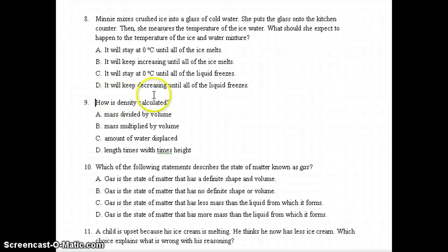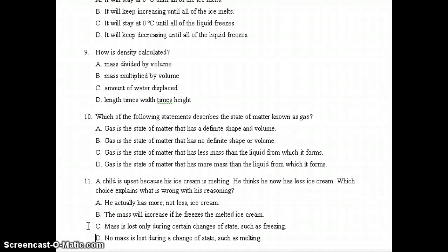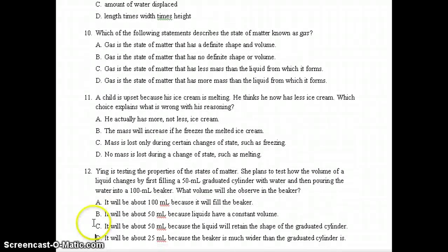Number 9, how is density calculated? The correct answer, if I think to the formula, the correct answer is A, mass divided by volume. Number 10, which of the following statements describe the state of matter known as gas? The correct answer, letter B, gas is the state of matter that has no definite shape or volume. Number 11, it says a child is upset because his ice cream is melting. He thinks he now has less ice cream. Which choice explains what is wrong with his reasoning? The correct answer is D, no mass is lost during a change of state, such as melting.